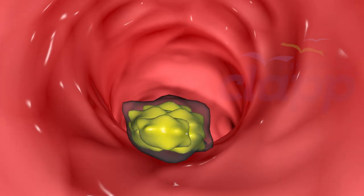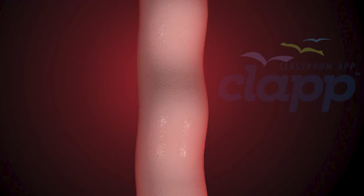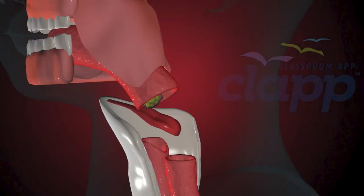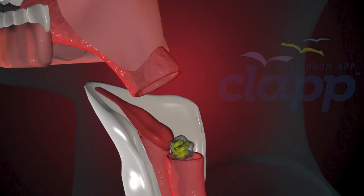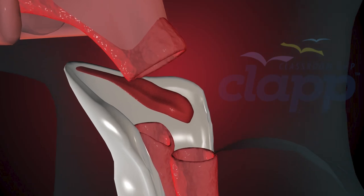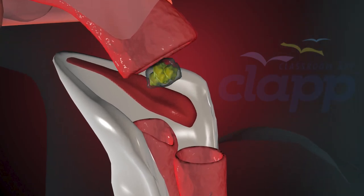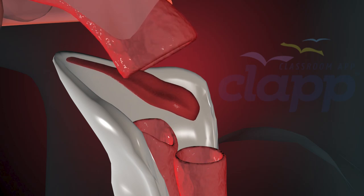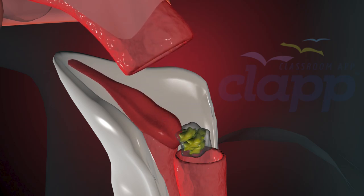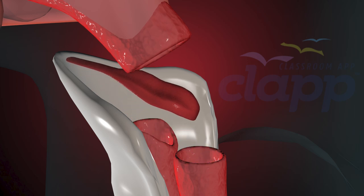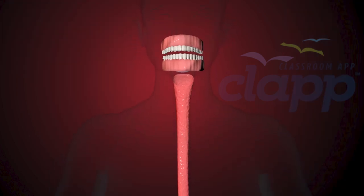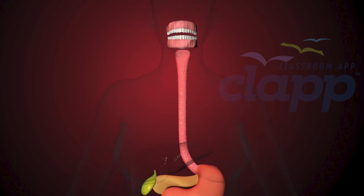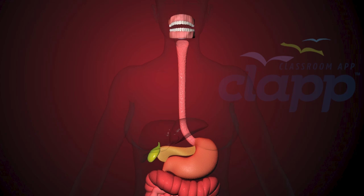Once you begin swallowing, the process becomes automatic. Muscles in your esophagus propel food down to your stomach. The epiglottis is a flexible flap at the end of the larynx in the throat — it acts as a switch between the larynx and the esophagus to permit air to enter the airway to the lungs and food to pass into the esophagus. The esophagus is a muscular tube connecting the throat with the stomach, about 20 centimeters long.